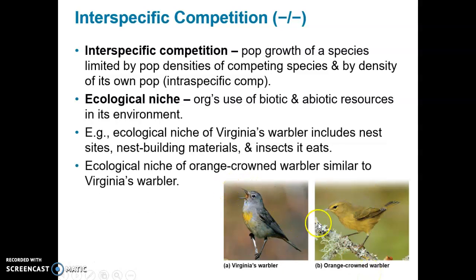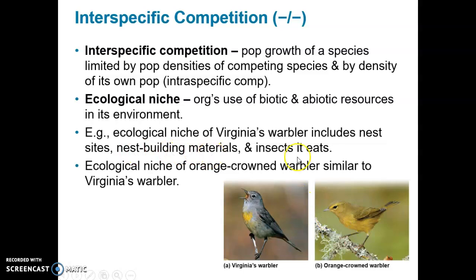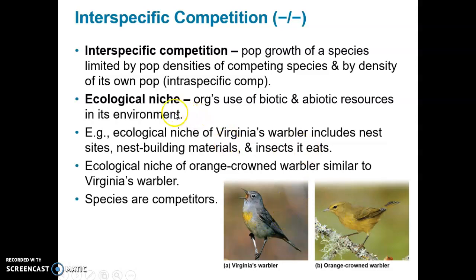Because they share a similar niche, they compete for similar resources in their environments. If one species is more successful at obtaining these resources, the other species is harmed — fewer nesting sites, less building material, and less food all lead to fewer offspring. The general idea is that if two organisms' ecological niches overlap greatly, they are in direct competition, and there is usually a harmful effect on both species to some degree.